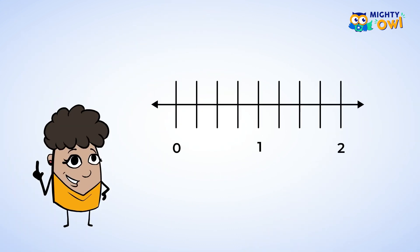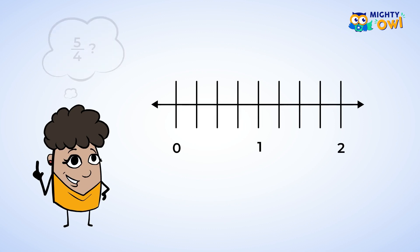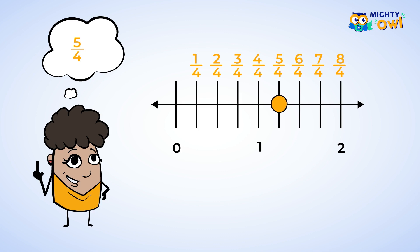So far, so good. We've been looking at the number line between 0 and 1, but let's extend the number line to find where the fraction 5 fourths would be. Since we're working with fractions that have a 4 in the denominator, we know we have to split each of the new sections into 4 parts. We can label each section — we start with 1 fourth, then 2 fourths, all the way up to 4 fourths, which is a whole. When we go past the number 1, the next section must be 5 fourths, then 6 fourths and 7 fourths. Back to the task — 5 fourths. Let's put a dot there.